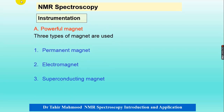The first component is the powerful magnet. The magnet is the most important part of NMR spectroscopy because it regulates all the components, whether in the form of proton or carbon. The powerful magnets used are: permanent magnet, electromagnet, and superconducting magnet.